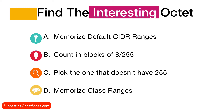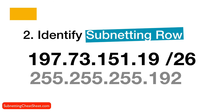So those are the four ways to find the interesting octet: memorize the default CIDR ranges, count in blocks of eight or 255, pick the octet that doesn't have 255 when given the subnet mask, or memorize the class address ranges — whatever method works best for you. Now when you sit down to the exam and your mind goes blank, the first step is to find the interesting octet. In the next video, we'll discuss how to find your subnetting row and use your subnetting cheat sheet.